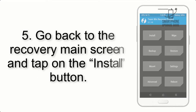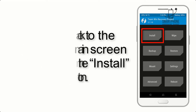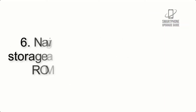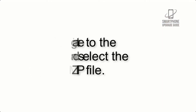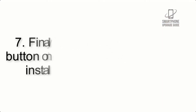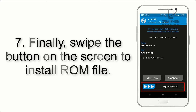Step 4: Swipe the button to wipe the device. Step 5: Go back to the recovery main screen and tap on the Install button. Step 6: Navigate to the storage and select the ROM zip file.